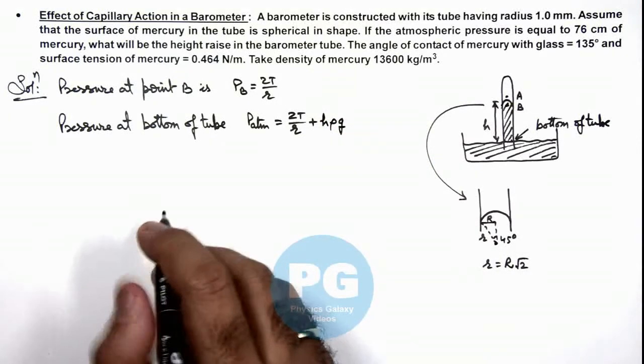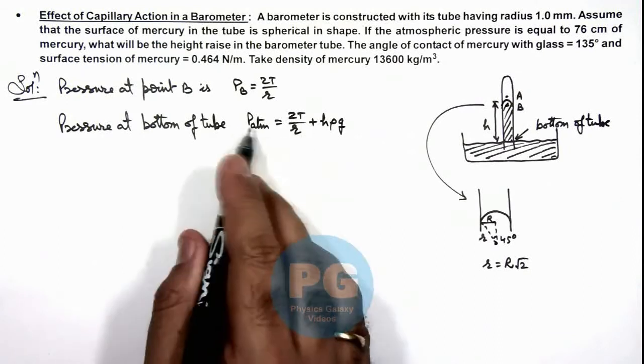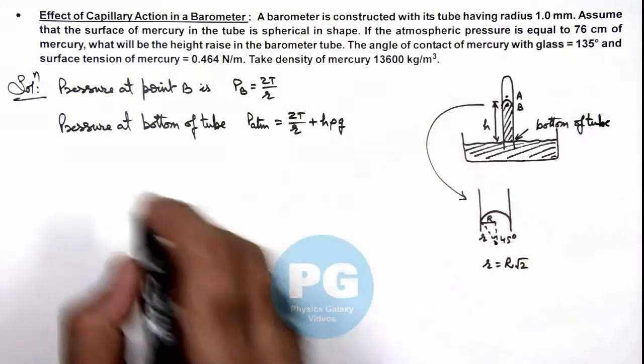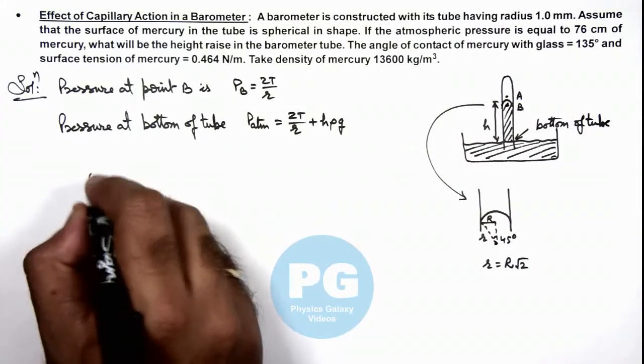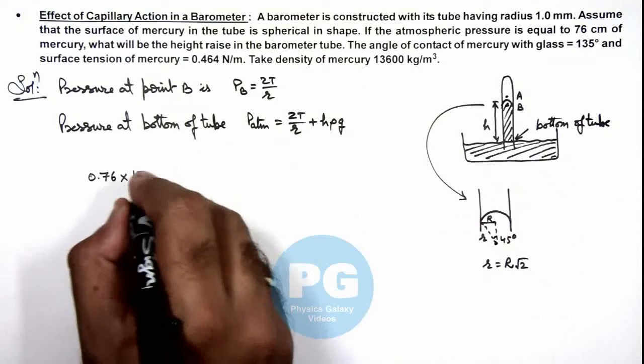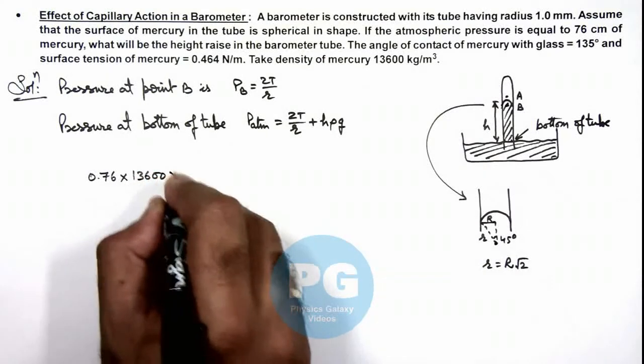Now if we numerically substitute the values, atmospheric pressure is 76 centimeter of mercury, which we can write as 0.76 multiplied by 13,600 multiplied by g.